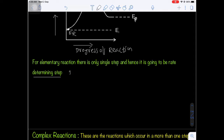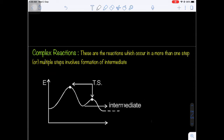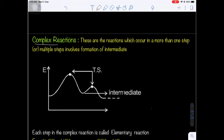Complex reactions are those which occur in more than one step. Those reactions involving multi-step processes — more than one reaction present — are called complex reactions. In multi-step reactions, there will be a formation of reaction intermediates.